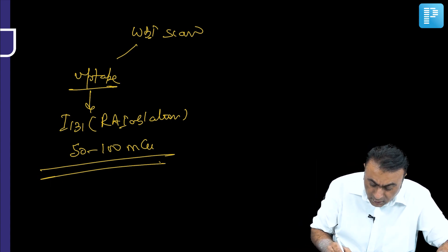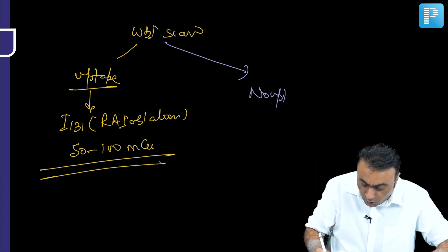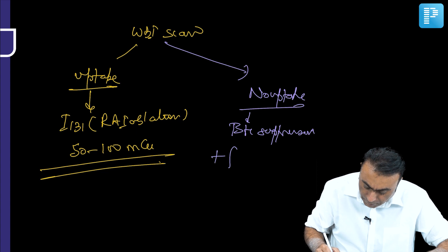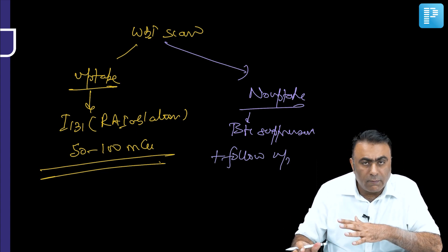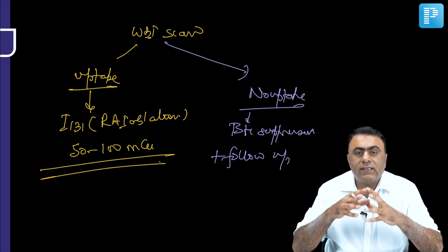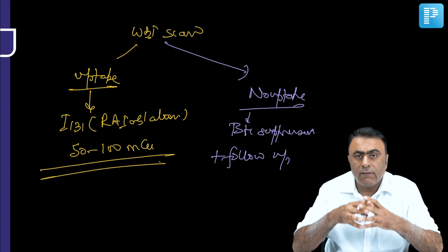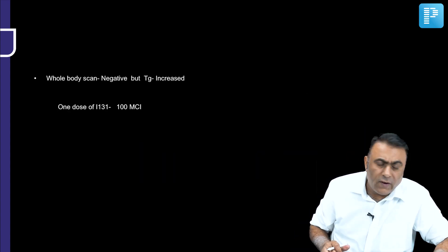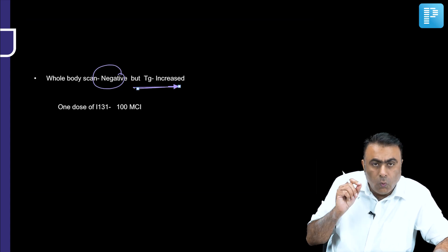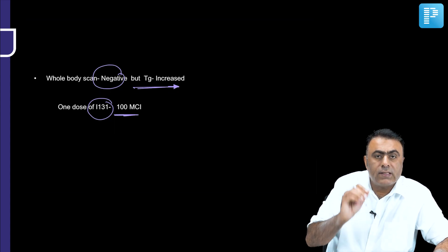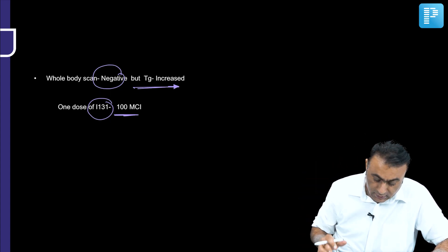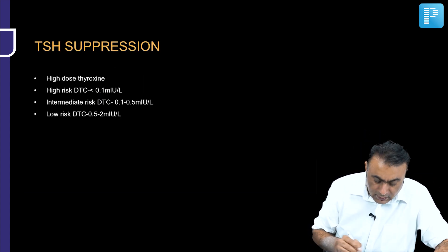If on the whole body iodine scan there is no uptake, keep the patient on TSH suppression and in follow-up. One more important scenario: if the whole body iodine scan is negative but the thyroglobulin level is increased, one dose of iodine-131 around 100 millicuries should still be given to the patient.